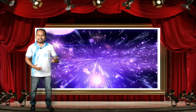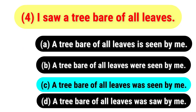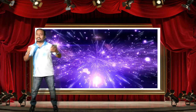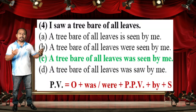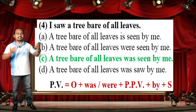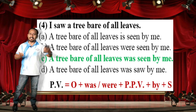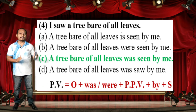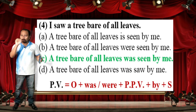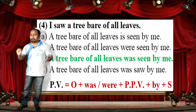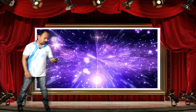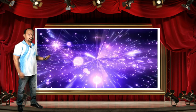The correct answer is: 'A tree bare of all leaves was seen by me.' The given sentence is in simple past tense, and the passive voice formula for simple past tense is: Object + was/were + PPB + by + Subject.